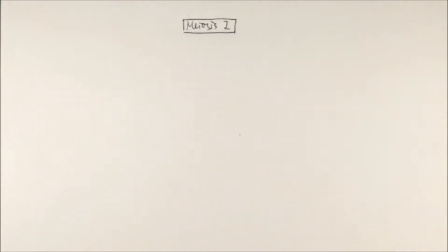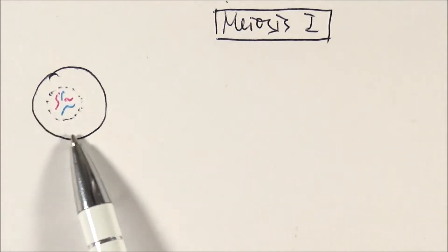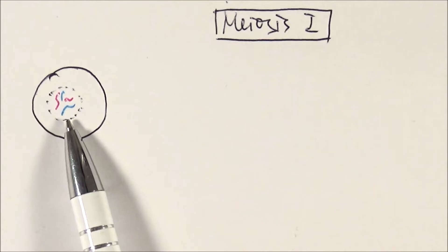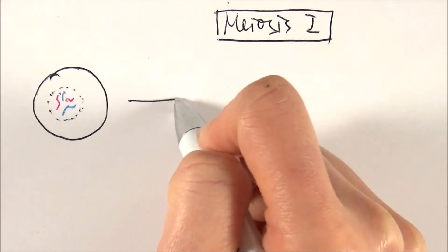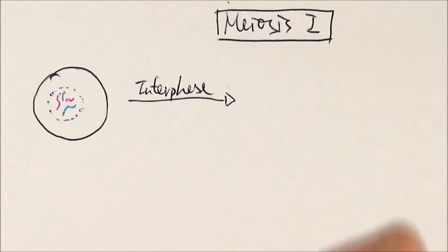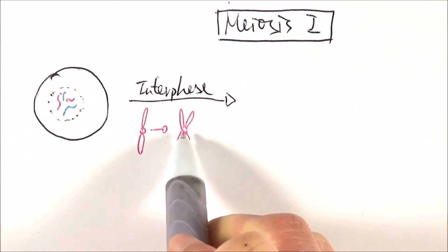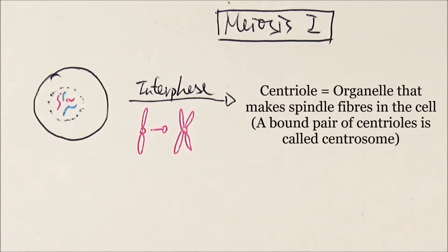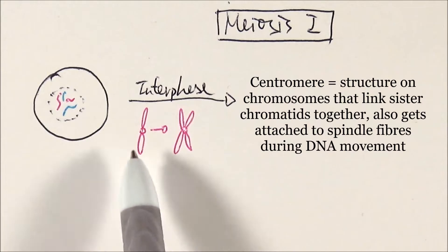We'll be looking at the detailed process of meiosis, starting with meiosis one. In the very beginning we have a normal body cell with a nucleus — that's the nuclear envelope — and let's say two chromosomes from the mum (pink) and two from the dad (blue), with slightly different sizes. During interphase, specifically S phase for DNA synthesis, each chromosome becomes doubled and they're attached with a centromere in the middle. Be careful not to mix up centromere and centrioles — centrioles form spindle fibers for moving chromosomes around, while the centromere is the structure connecting the two sister chromatids together.